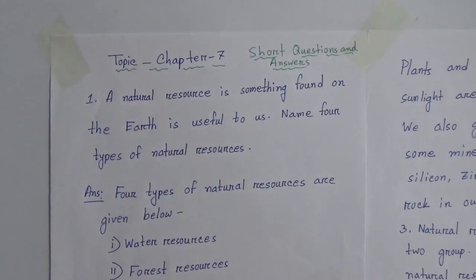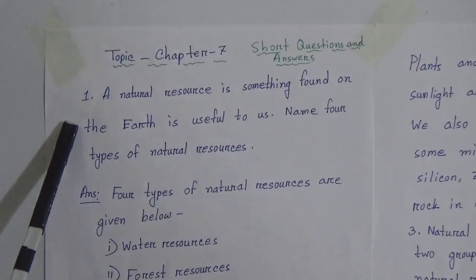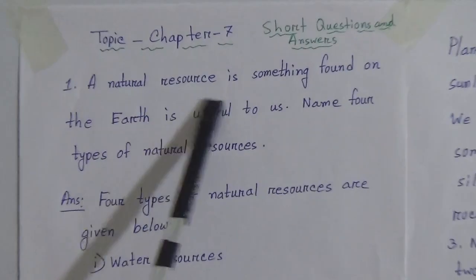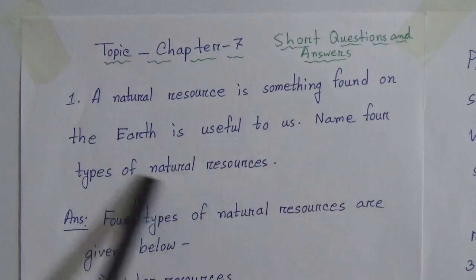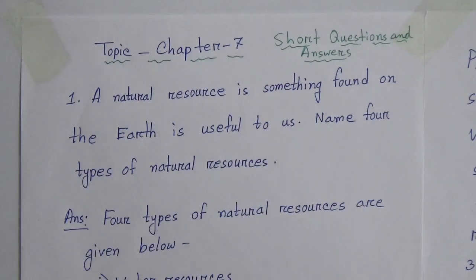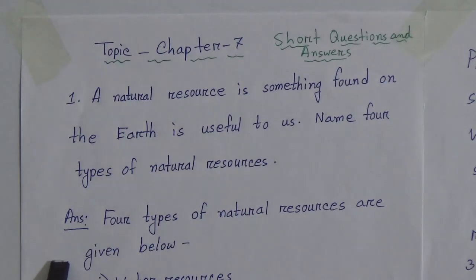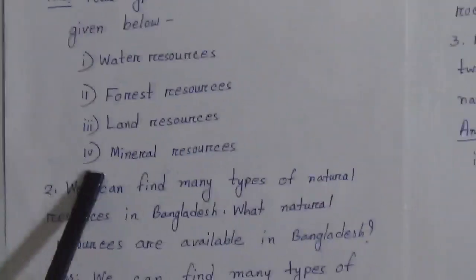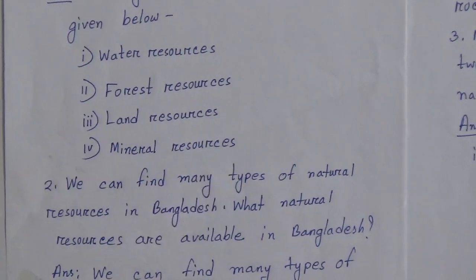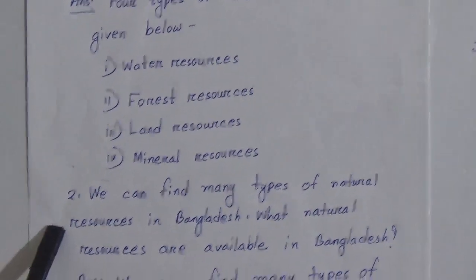Look here — I have written all short questions and answers from number 1 to number 5. Number 1 short question: a natural resource is something found on the earth that is useful to us. Name 4 types of natural resources. The answer is: 4 types of natural resources are — 1. Water resources, 2. Forest resources, 3. Land resources, and 4. Mineral resources.